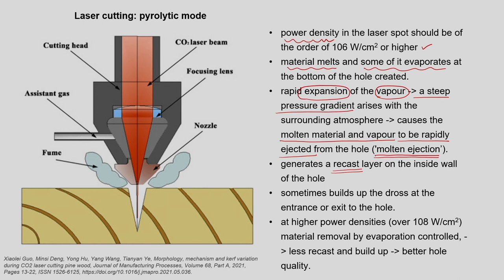Not all the molten material gets ejected out — there is no 100 percent ejection efficiency. Some of the material gets redeposited and recasted on the cavity itself — inside the wall — and that is called the recast layer. In some cases, some dross is generated; some portion gets deposited at the top side at the opening of the cavity. If we go to a much higher power density, say more than 10^8 W/cm², this dross can be reduced. Some minimum amount of dross will certainly remain, but by applying higher power densities we can easily reduce it and generate a better quality hole.